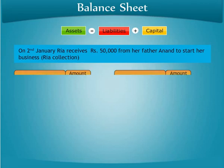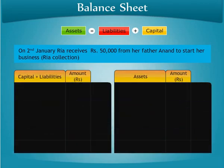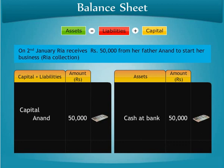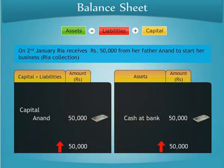This journal entry will be posted in the balance sheet: on the asset side, Cash/Bank will show a balance of 50,000, and the Capital Account will be credited by 50,000. Assets and liabilities will tally by 50,000, and the balance sheet will get tally.